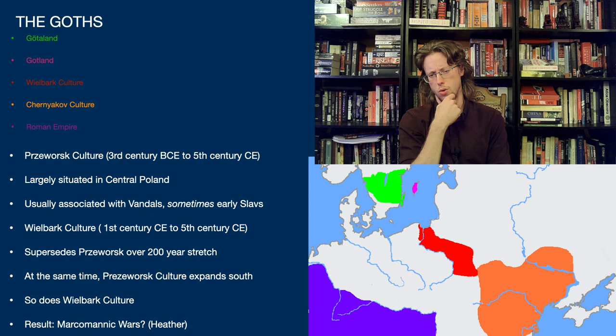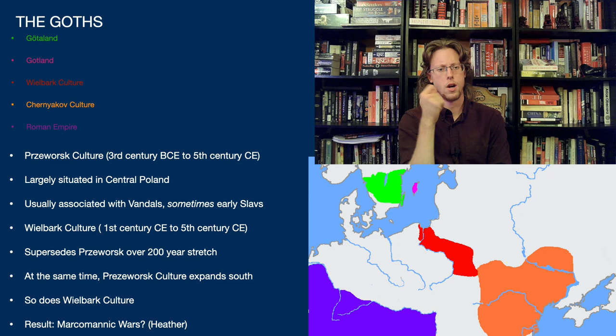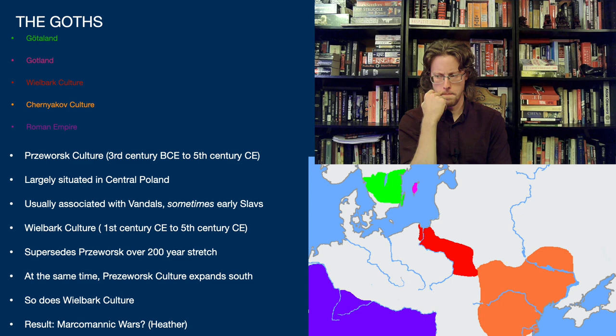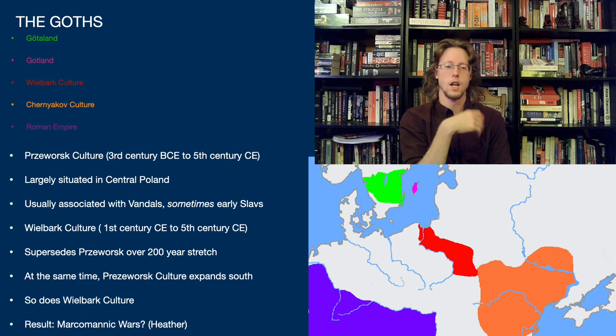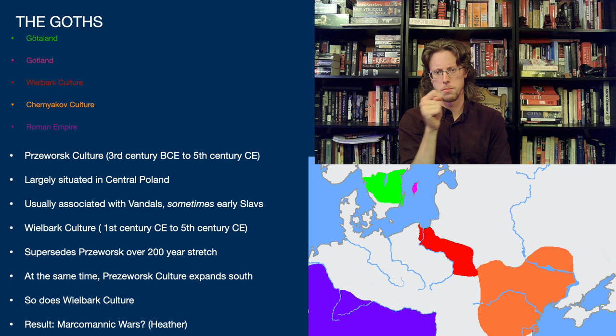So if the Goths migrated, we have archaeological evidence to support it — though it's problematic and we'll talk about this more in the next video. As this is all moving, a series of wars called the Marcomannic Wars are set off. The point is that it's very easy to just read this as the Goths migrating from southern Sweden and northern Poland, but there are also a whole lot of population shifts going on in this period. Where the Goths come from is probably a combination of migration and in situ development.